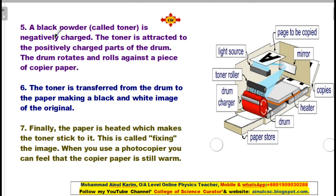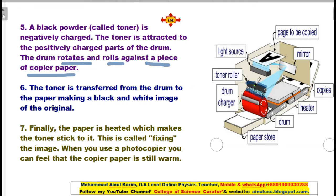A black powder called toner is negatively charged. The toner is attracted to the positively charged parts of the drum. The drum rotates and rolls against a piece of copier paper, and the toner is transferred from the drum to the paper, making a black and white image of the original.